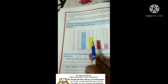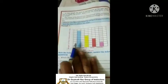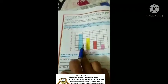Okay, this we call it as a bar chart. With the help of the above bar chart, answer the following questions. Which flowers are sold maximum? Maximum means more.